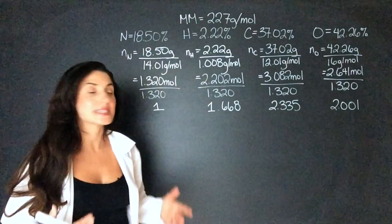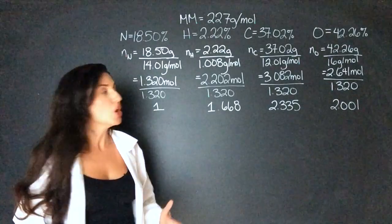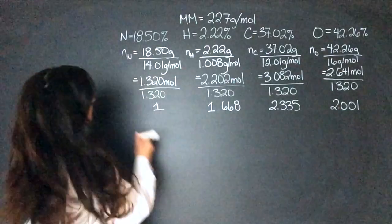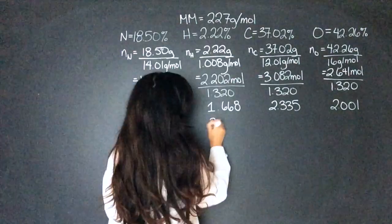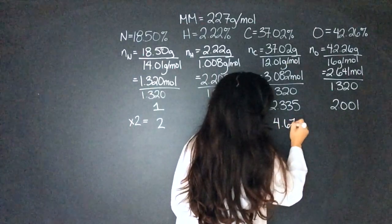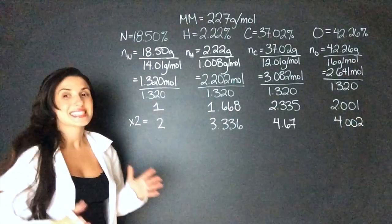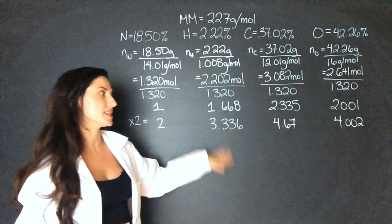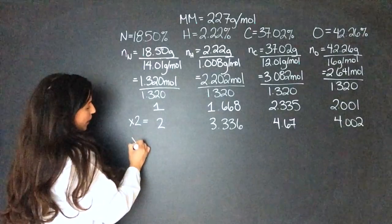What we have to do is multiply all these numbers until we get whole numbers. So let's multiply them all by 2 and see what happens. 2, 3.336, 4.67, and 4.002. This still isn't good enough. We can't round 3.336 or 4.67. So let's try multiplying it by 3.